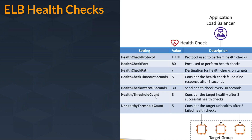Healthy threshold count is 3. If it is set to 3, you can consider the target healthy after 3 successful health checks. Whether the target is an EC2 instance, application load balancer, or network load balancer, it would be considered healthy only when it passes the healthy threshold count set in your health check settings.